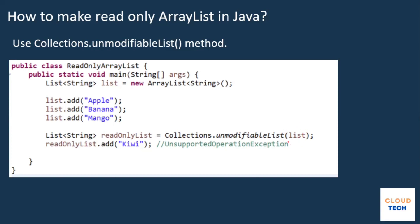I pass the sample list to Collections.unmodifiableList() and get back a reference to an unmodifiable list. When I try to modify this list — for example, adding kiwi — I get an UnsupportedOperationException because the list is unmodifiable. You should be able to answer Collections.unmodifiableList() to make your list read only. This is a very important interview question.